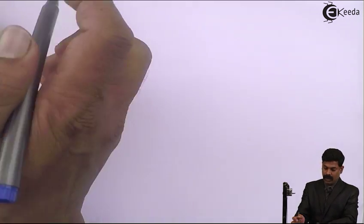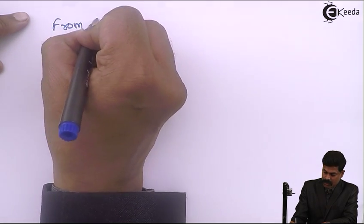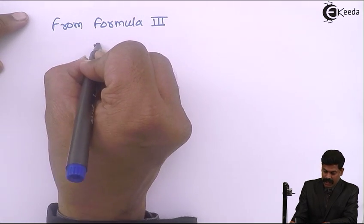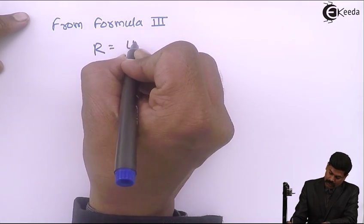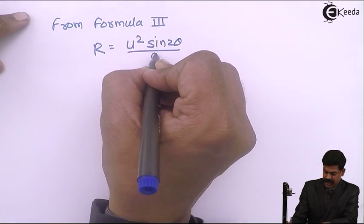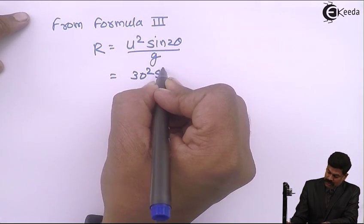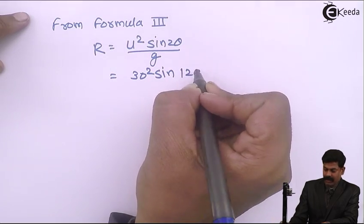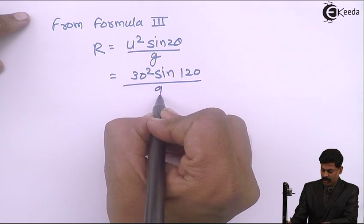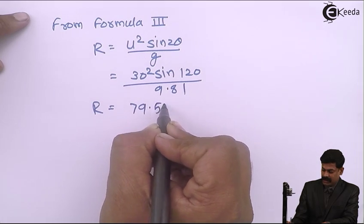Now from formula third: R equals u square sine of 2 theta by g. So, 30 squared into sine 120, since theta is 60, therefore 2 theta is 120, divided by 9.81. Range equals 79.53 meter.